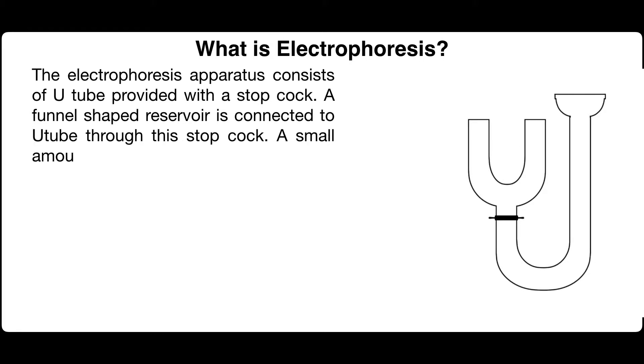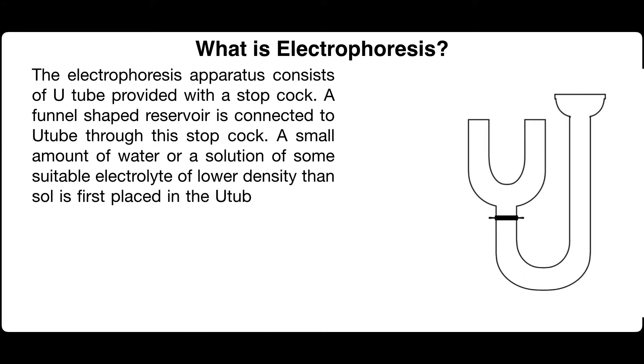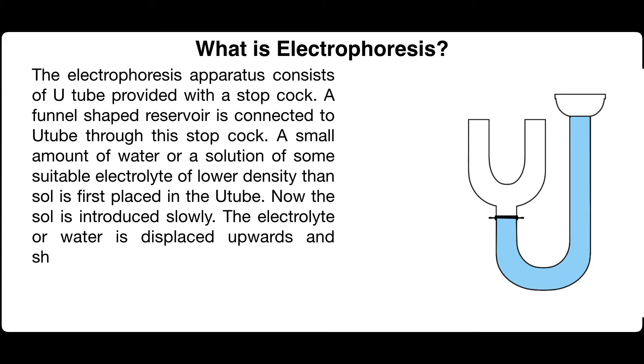A small amount of water or a solution of some suitable electrolyte of lower density than the sol is first placed in the U-shaped tube. Now, the sol is introduced slowly. The electrolyte or water is displaced upwards and sharp boundaries are produced in both the arms of U-shaped tube.